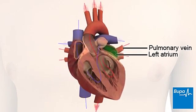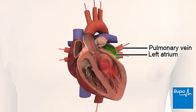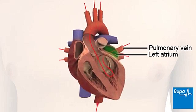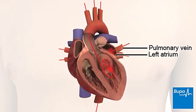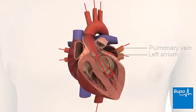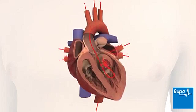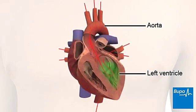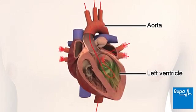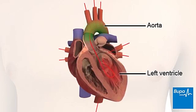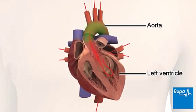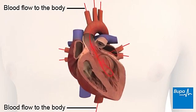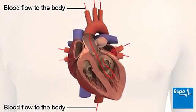The left atrium receives blood that contains oxygen from the lungs via the pulmonary veins. This blood then passes into the left ventricle, which pumps it into the aorta. From the aorta, the blood is passed to the different parts of the body.